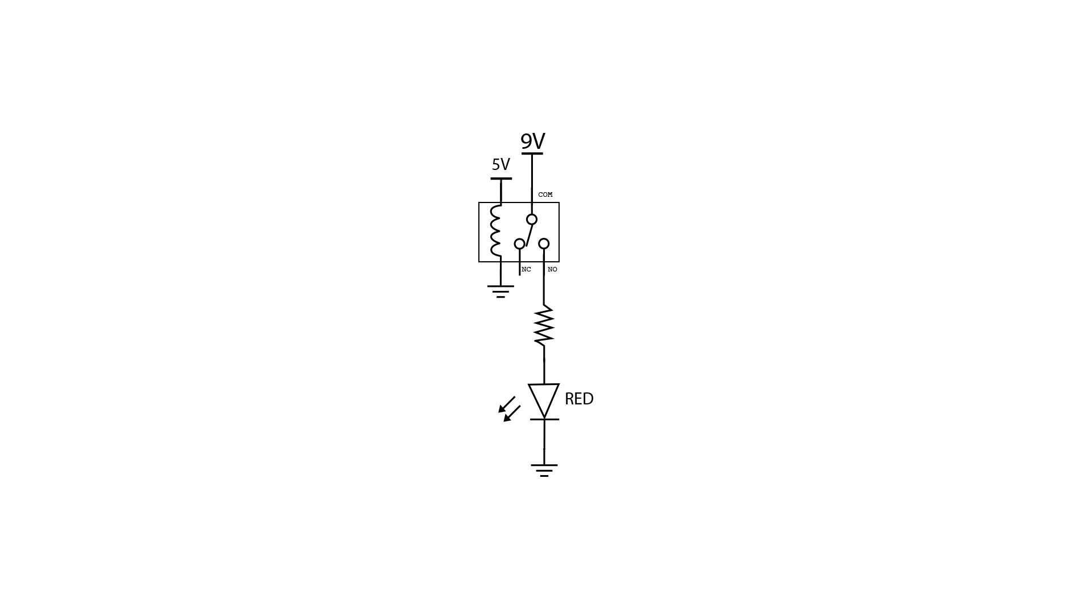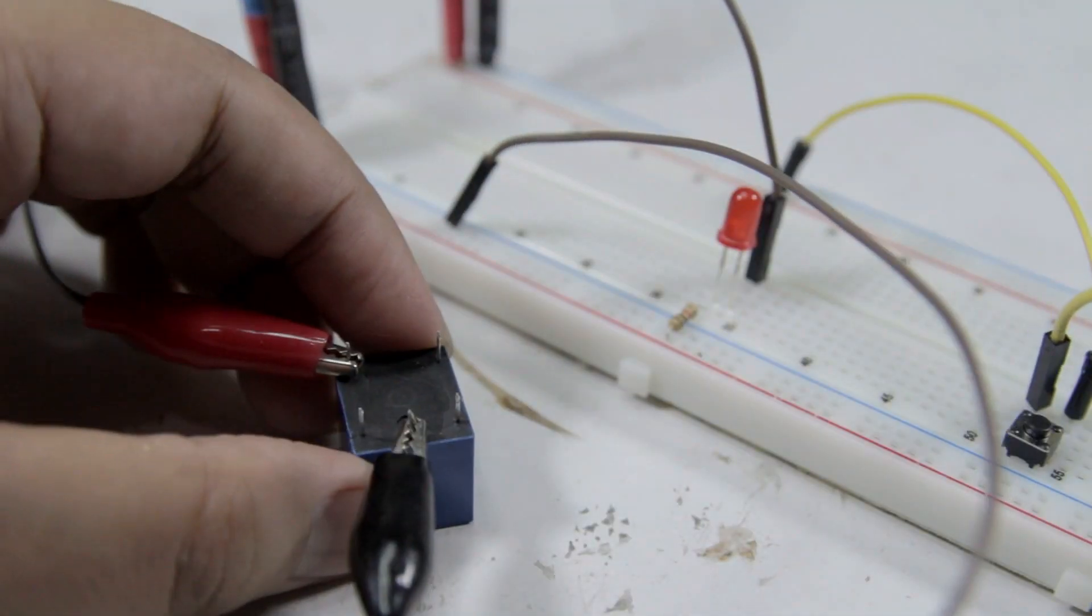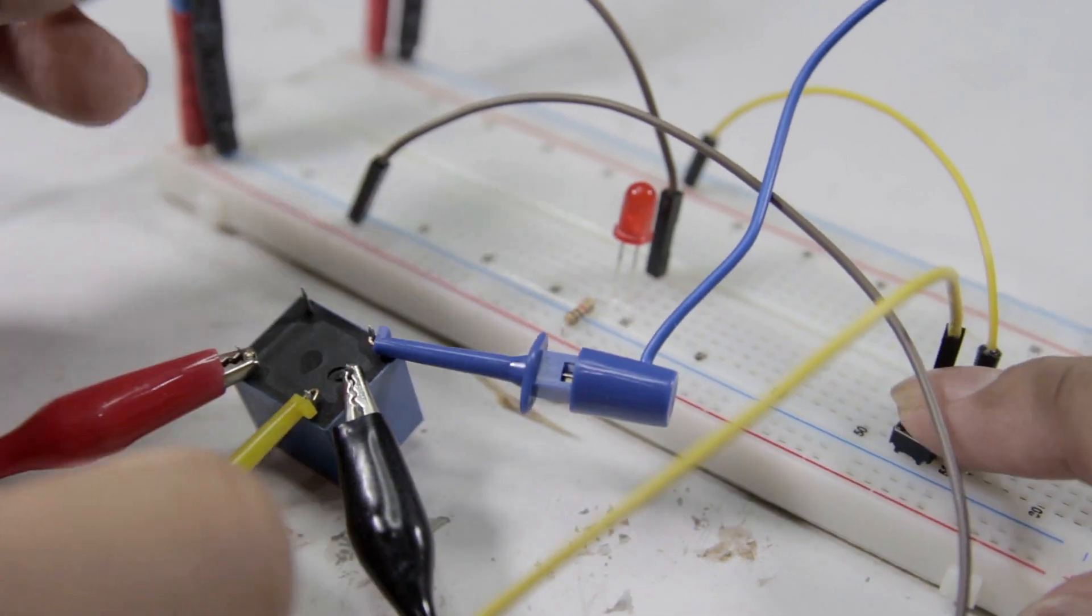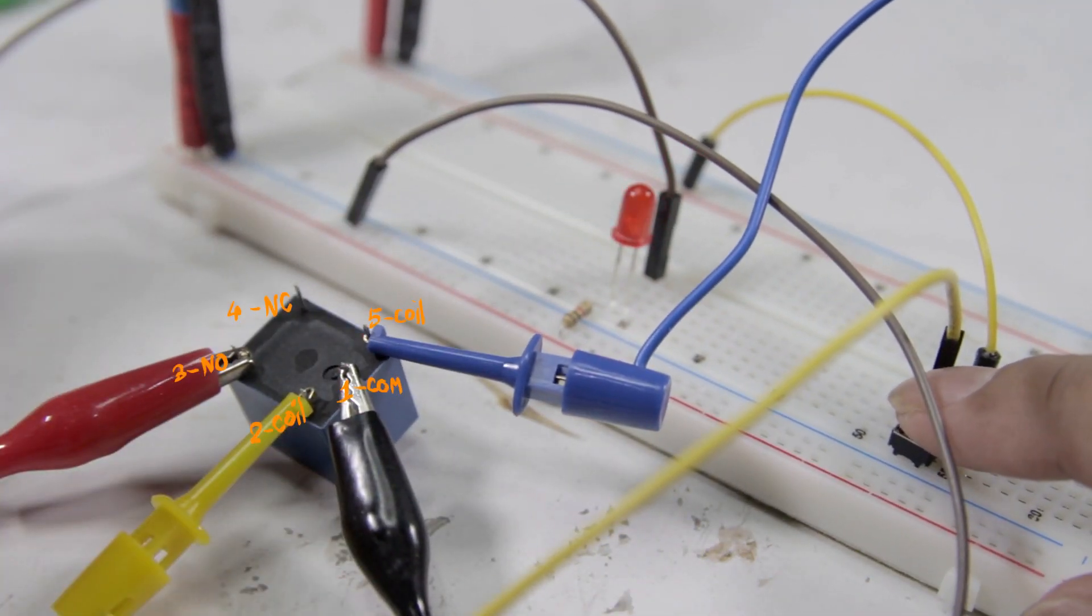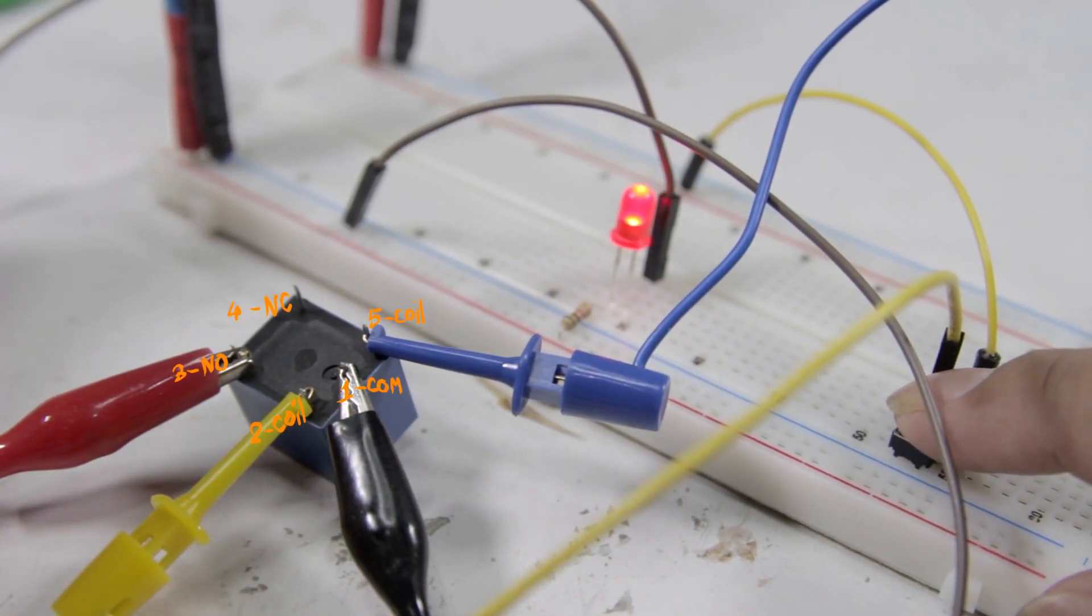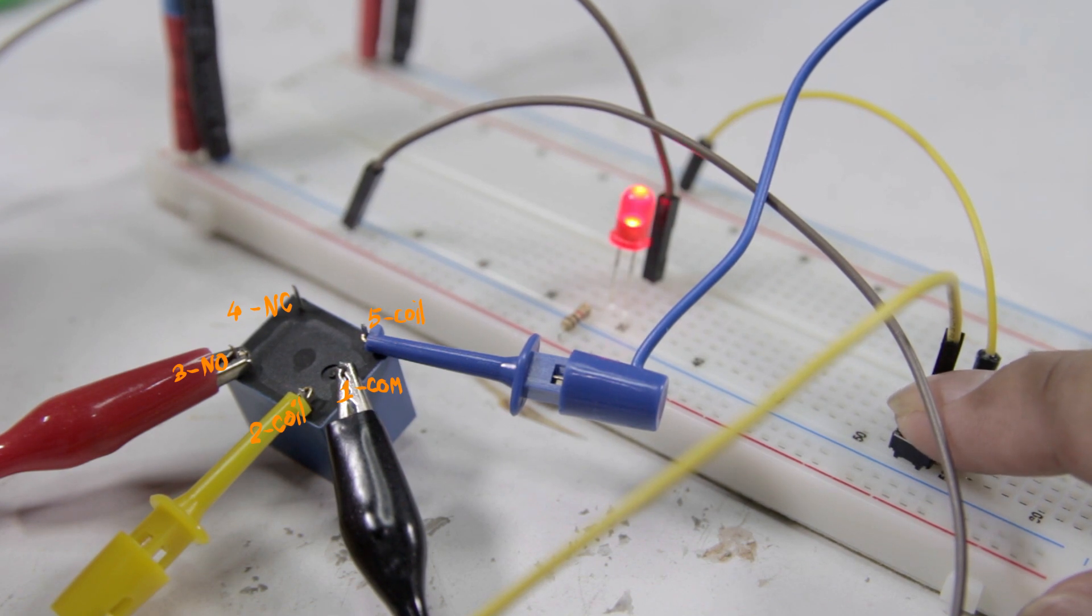Then I connect a 5-volt power to the coil, and for the sake of demonstration, I add a little switch so I can manually control the power to the coil. Whenever I hit the switch, applying 5 volts power to the coil of the relay, the LED lights up.